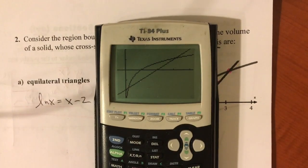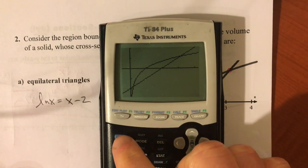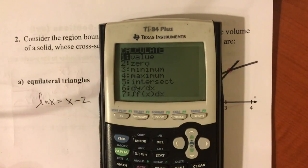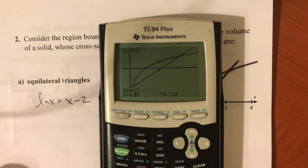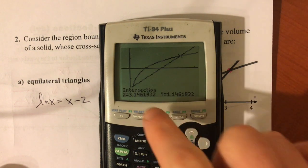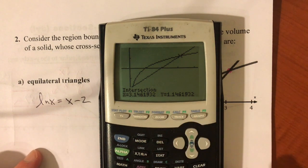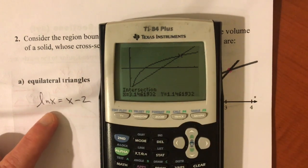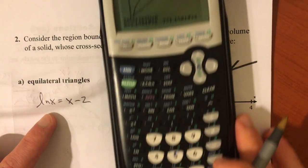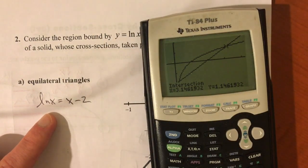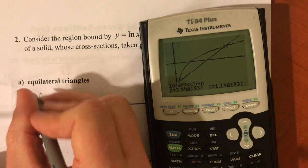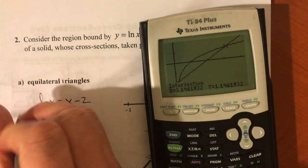And I already have this graph on my calculator, how convenient. Second trace, 5 for intersect, enter, enter, enter, it goes to the closest one. And there are two solutions. Now just before you clear this, keep in mind that if you wrote this, you are solving it for x. And so that would be when x is 3.146.